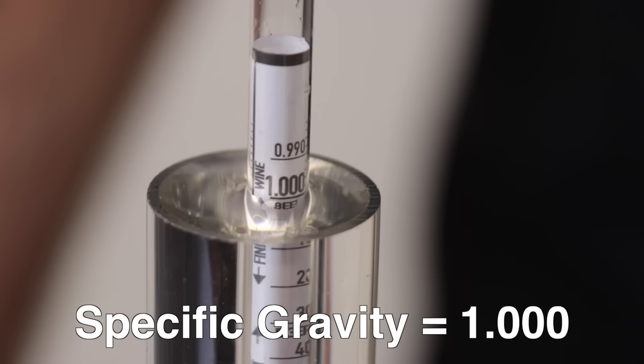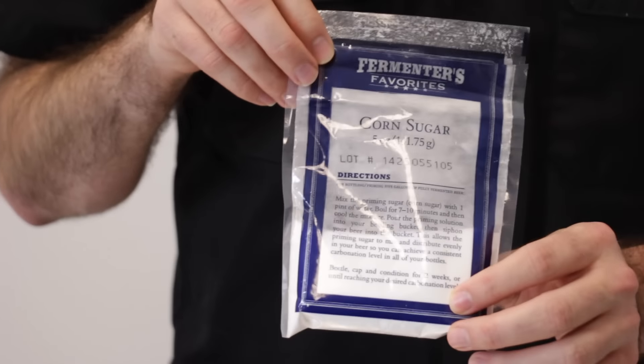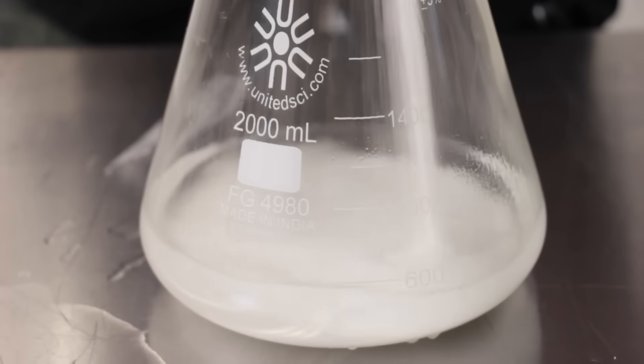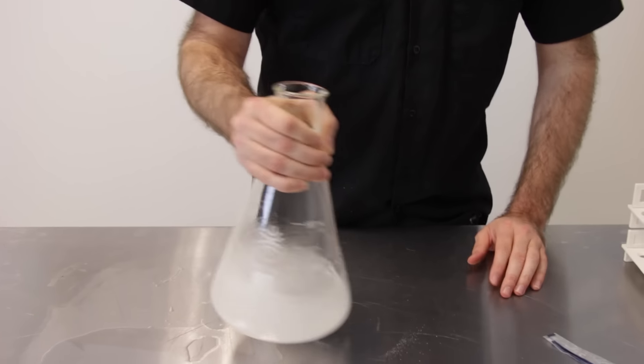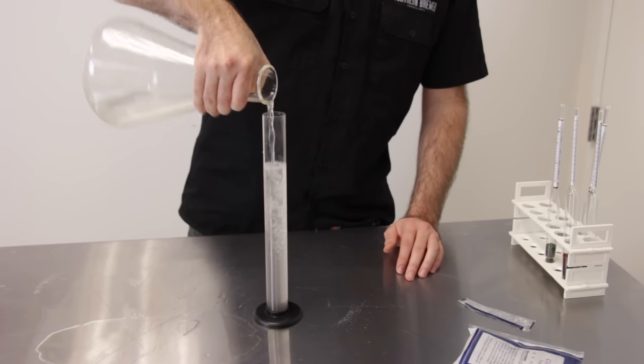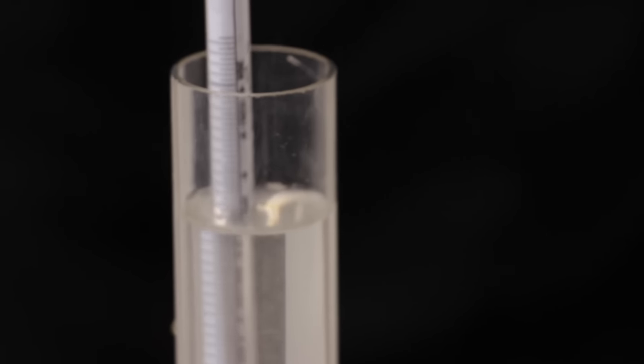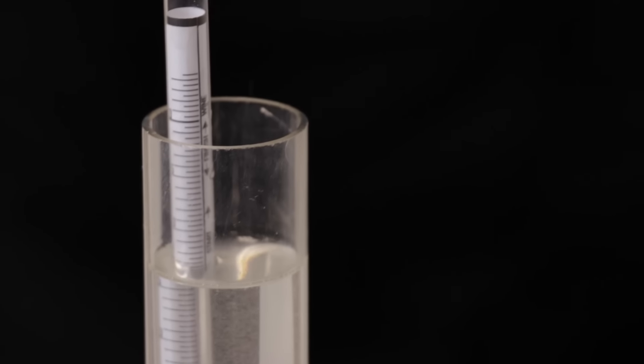Now, to give you an idea of what's going on, we will add some plain priming sugar, just like you're going to get in your kit. Take that, add it to our Erlenmeyer flask, and we'll give her a swirl to dissolve. We'll take another sample, put it into this test jar, and we'll take another reading. Remember last time, pure water was at 1.000. This time, at about 1.056, 1.054.